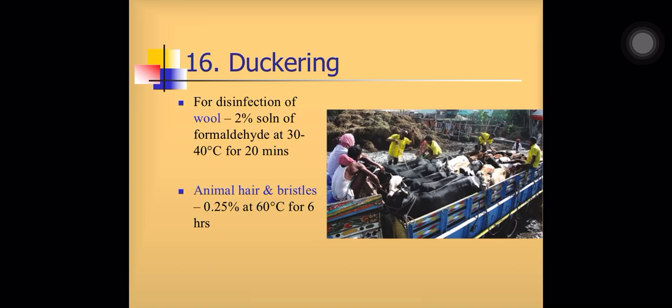Duckering: animal products such as wool, hair, and bristles are used for export and import purposes. To make sure these animal parts transported from one place to another do not carry the spores of Bacillus anthracis, they must be treated with chemicals. Treating animal products with formaldehyde to ensure they are free of Bacillus spores is a process known as duckering.